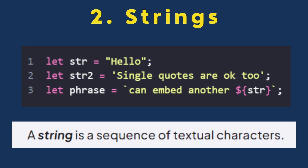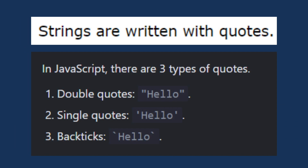A string is a sequence of textual characters. For example, 'hello' is a sequence of characters h-e-l-l-o, which makes it a string. Strings are written with quotes — single quotes are also OK. When strings are written with quotes, they are treated as strings.